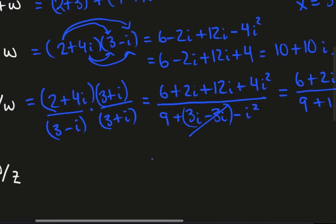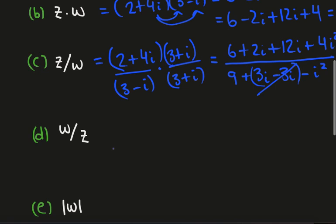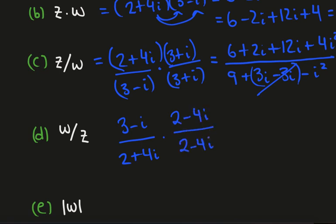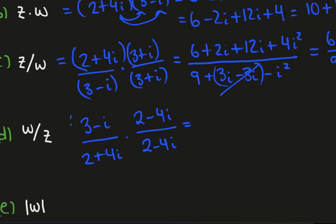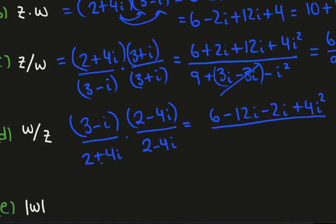Let's practice this again with w divided by z. We have 3 minus i over 2 plus 4i. Again we multiply by the conjugate, this time 2 minus 4i over 2 minus 4i. Expanding the numerator: 3 times 2 is 6, then minus 3 times 4i which is minus 12i, then minus 2i, and plus 4i squared.